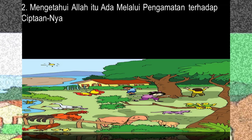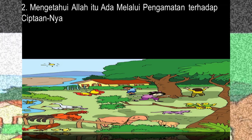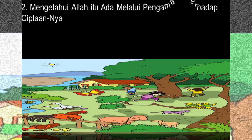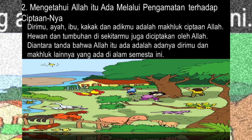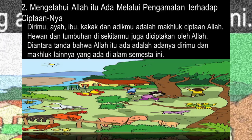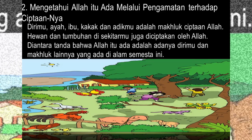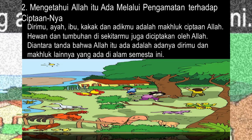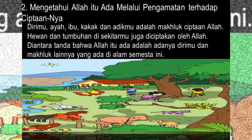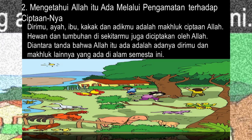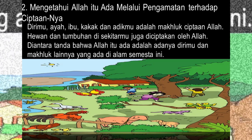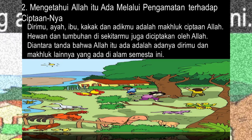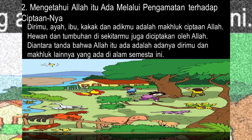Mengetahui Allah itu ada melalui pengamatan terhadap ciptaannya. Anak-anak, dirimu, ayah, ibu, kakak, dan adikmu adalah makhluk ciptaan Allah. Hewan dan tumbuhan di sekitarmu juga diciptakan oleh Allah. Di antara tanda bahwa Allah itu ada adalah adanya dirimu dan makhluk lainnya yang ada di alam semesta ini. Manusia, hewan, dan tumbuhan merupakan makhluk ciptaan Allah subhanahu wa ta'ala.